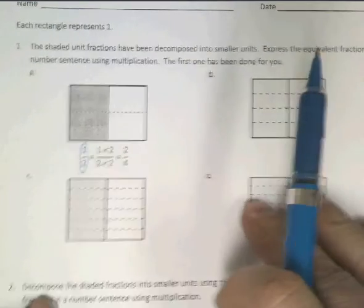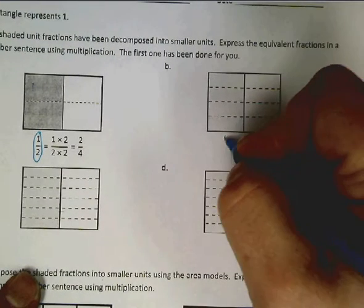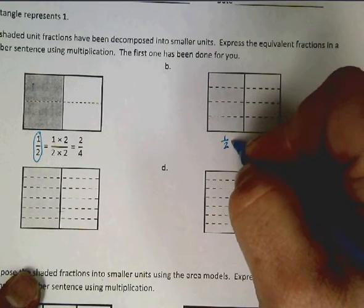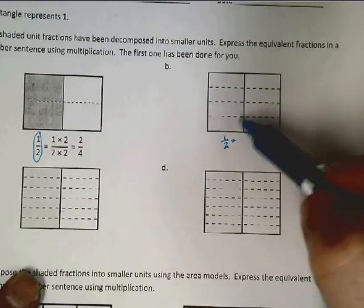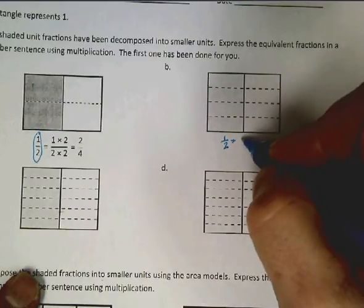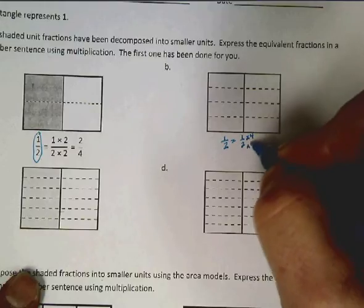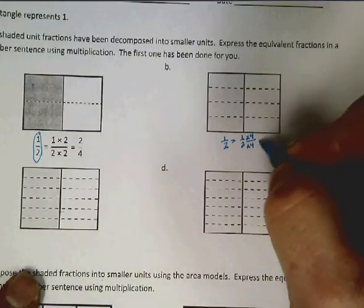Over here on B, we started out with one half again. We quadrupled the space, so we're going to take one half, multiply the numerator by four, the denominator by four.